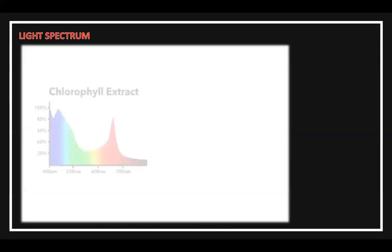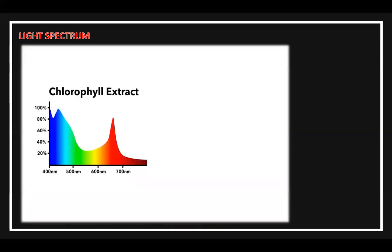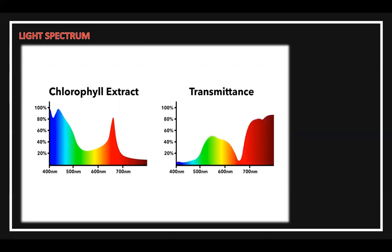Chlorophyll, since it absorbs red and blue light so well, actually blocks that light from penetrating deeper into the leaf and into any of the plant below. So when we talk about light, it's not just absorbance that is important. Green, yellow, and infrared light have high transmittance — these are the colors that power growth beneath the canopy.